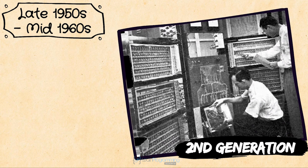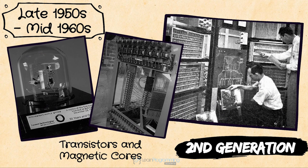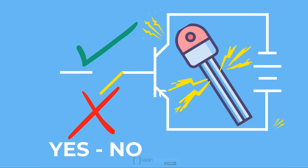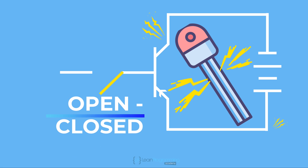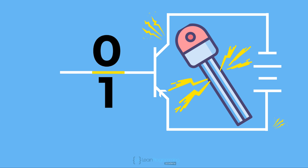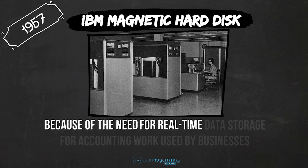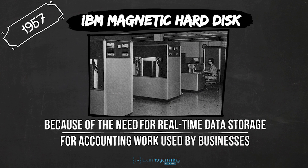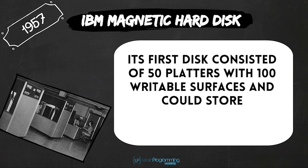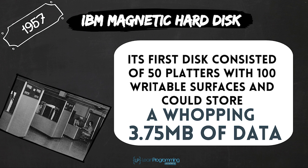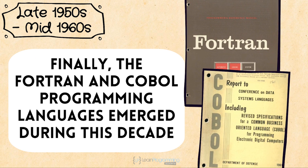The second generation, from the late 1950s to mid 1960s, used transistors and magnetic cores rather than vacuum tubes, which reduced their physical size somewhat. Transistors supported two states — for example, on/off, yes/no, open/closed — and are implemented as two binary digits, zero and one, often referred to as bits. IBM invented the magnetic hard disk around 1957 for real-time data storage for accounting work. Its first disk consisted of 50 platters with 100 writable surfaces and could store a whopping 3.75 megabytes of data. Finally, the FORTRAN and COBOL programming languages emerged during this decade.